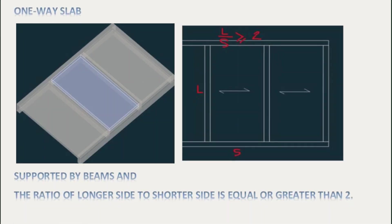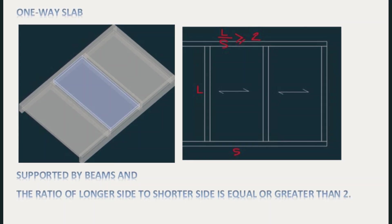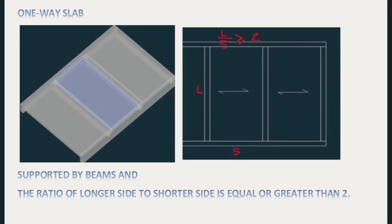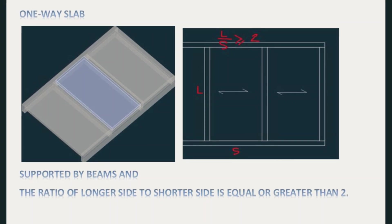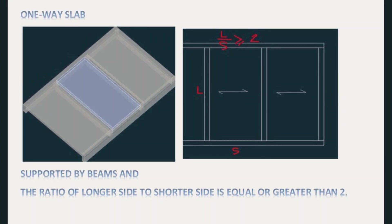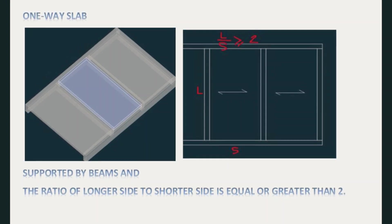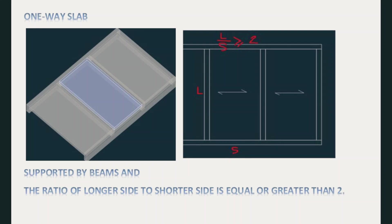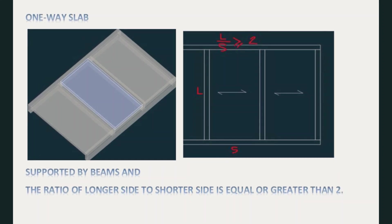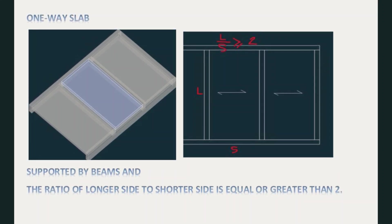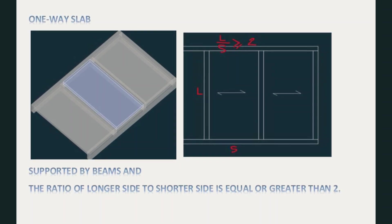There are different types of slab. The first type is a one-way slab. A slab is one-way when it's supported by beams and the ratio of the longer side to the shorter side is equal to or greater than two. So if this slab is loaded, logically it will use the shortest distance to transfer the loads to the nearest beams. Hence the direction of the main reinforcement should be in the short direction.